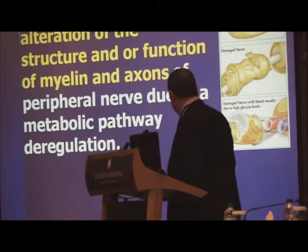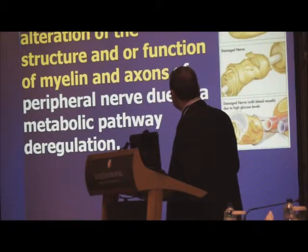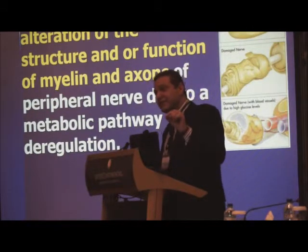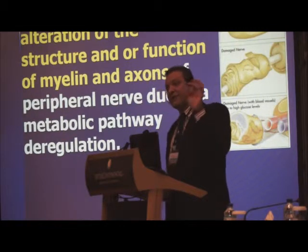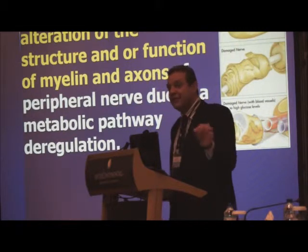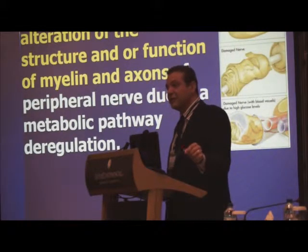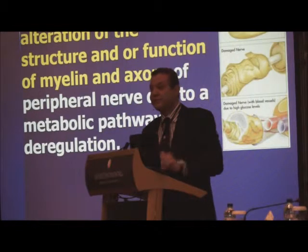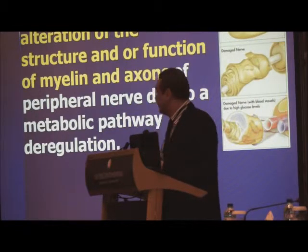When you look at the anatomy of the nerves, we have the node of Ranvier, we have the myelin sheath and the axon inside. The affection is either to the myelin sheath itself or to the axons, and of course this depends on the severity of the disease.